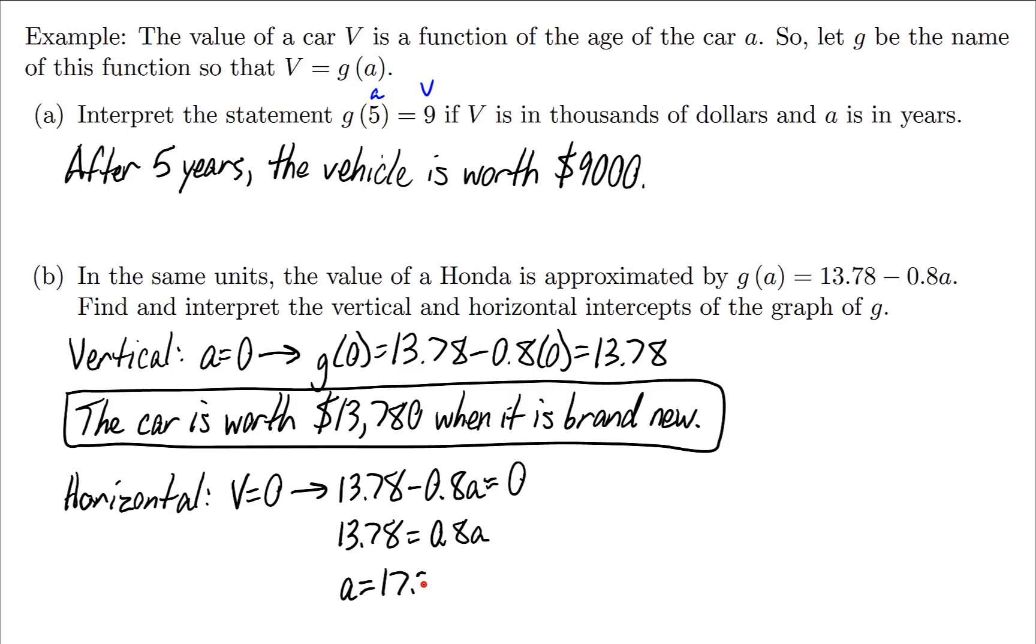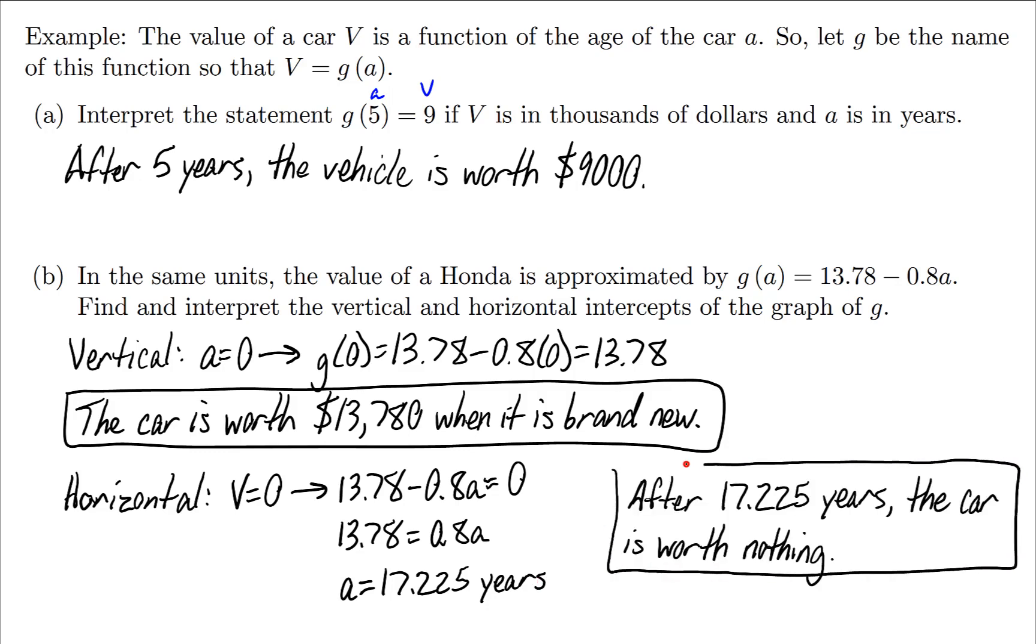Let's leave that number as is, and remember that number will be in years. Now this might not necessarily be accurate because a car is never completely down to a value of zero. It's always worth a scrap metal amount. But let's write this down as though that's possible: After 17.225 years, the car is worth nothing.